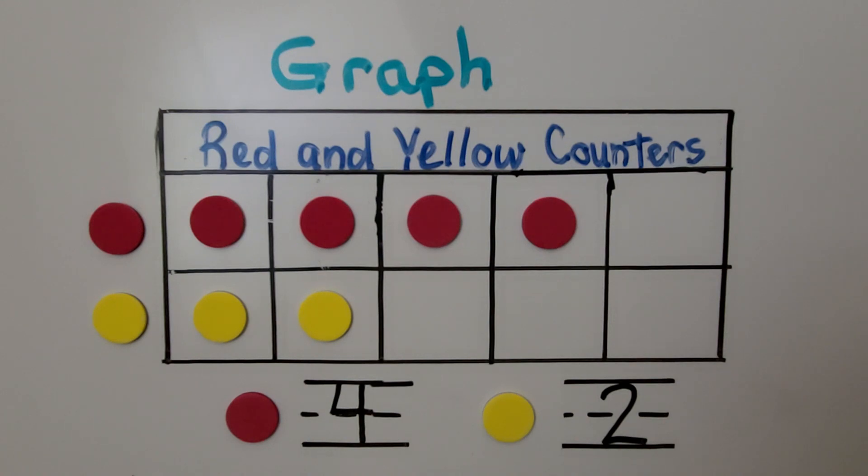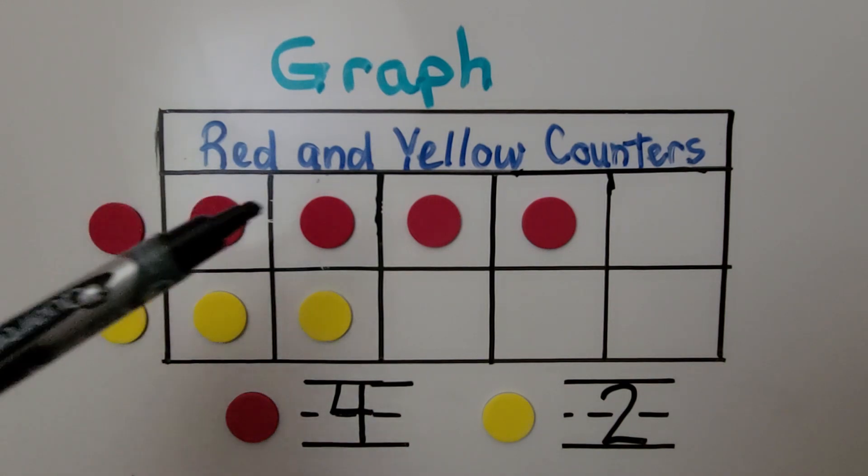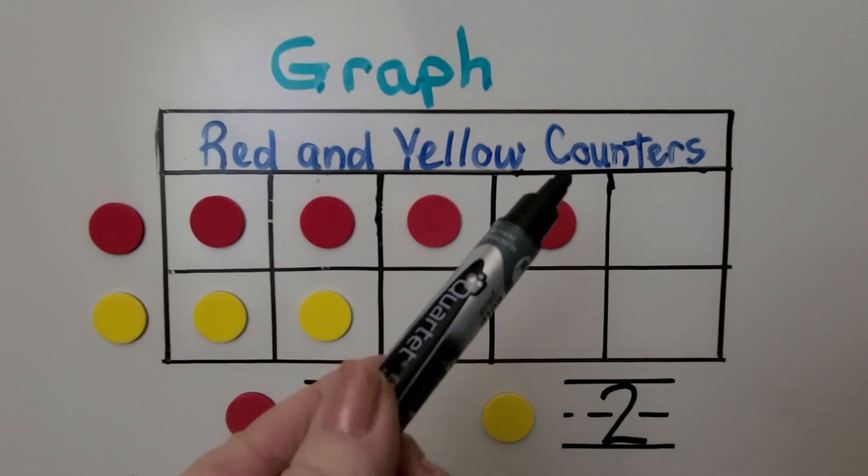A graph is a chart that shows information. Here we have red and yellow counters in a graph, and we can read the graph to know how many of each there are. The graph has a title, Red and Yellow Counters.